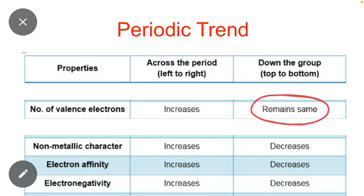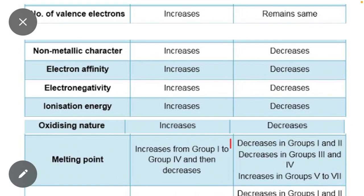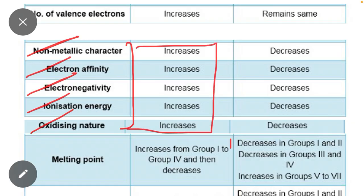Down the group, the number of valence electrons remains same. Just one property remains same. The remaining five properties - non-metallic character, electron affinity, electronegativity, ionization energy, and oxidizing nature - all these five properties always increase in periods and always decrease in groups.